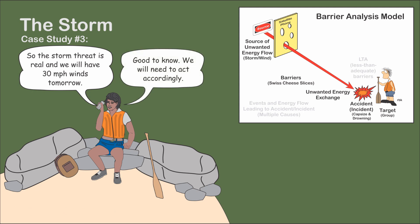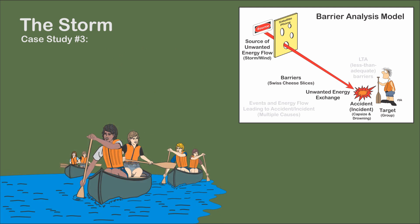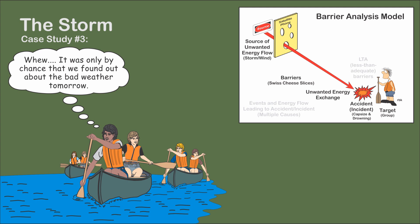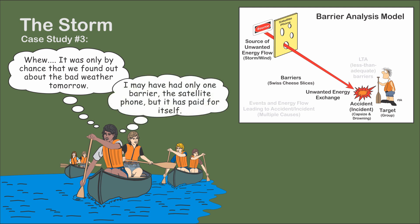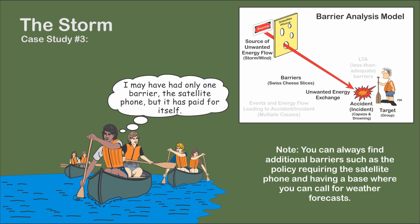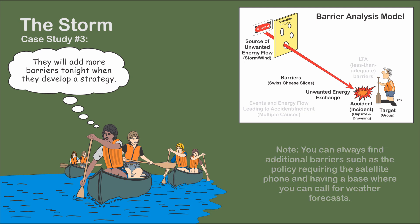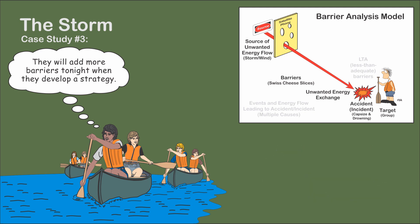They have a potential problem, which the leader would discuss with the group that evening. As the group continues the trip, the leader has two thoughts: it was only by chance that they found out about the possible storm, and no matter how knowledgeable you are, you can't know everything. Unlike Kate and Jack who relied on multiple barriers, he only had one barrier — the satellite phone and BASE — to rely upon. But they hadn't yet taken steps to weather the storm, which would add more barriers to protect the group.